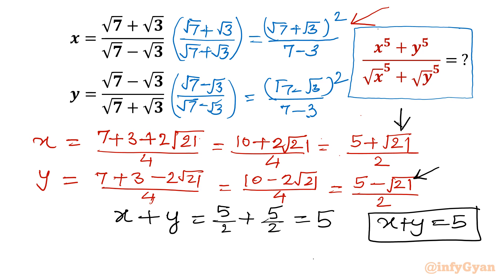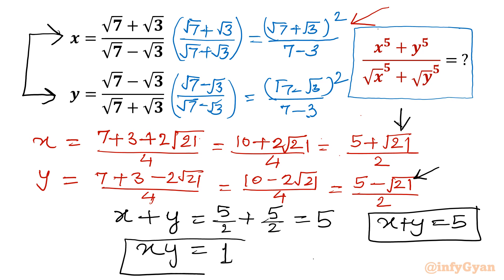Now if we take the product of x and y, we can see that the denominator of x is the numerator of y and vice versa, so xy = 1. We now have a system of equations: x + y = 5 and xy = 1, and our target is to evaluate the given expression.